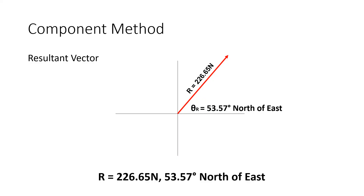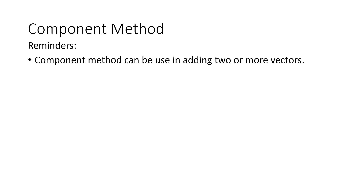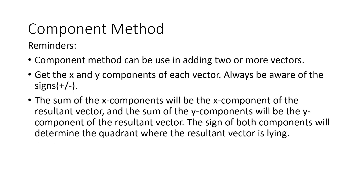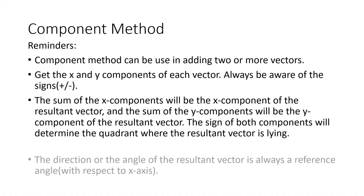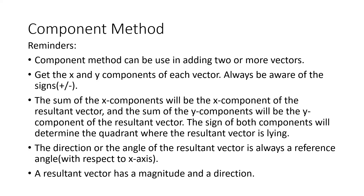Take note that since this is a vector, we should have both magnitude and direction. Some reminders on the component method: it can be used in adding two or more vectors. Get the x and y components of each vector and always be aware of the signs — positive or negative. The sum of the x components is the x component of the resultant, and the sum of the y components is the y component of the resultant. The sign of both components determines the quadrant where the resultant vector lies. The direction angle of the resultant is always a reference angle with respect to the x-axis. A resultant vector should always have both a magnitude and a direction.